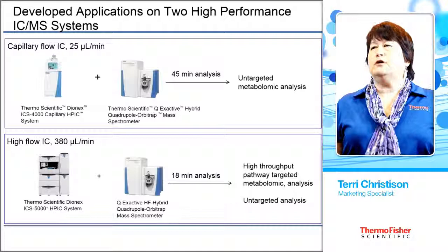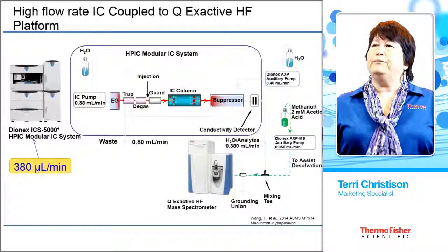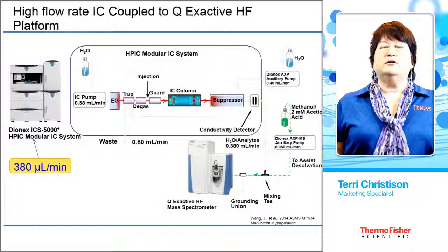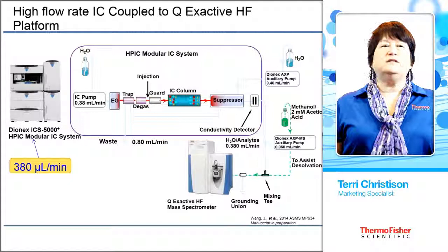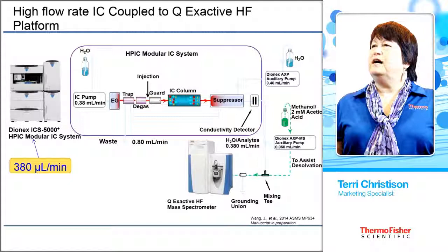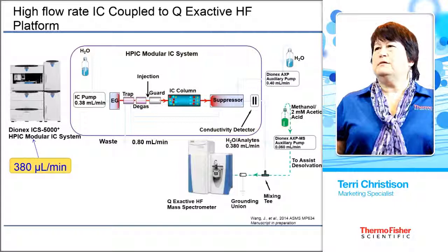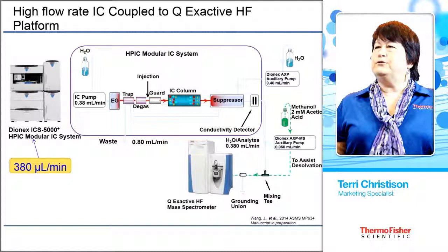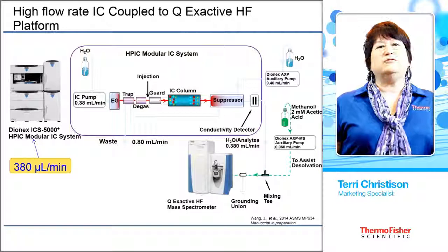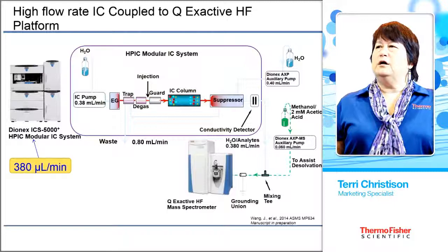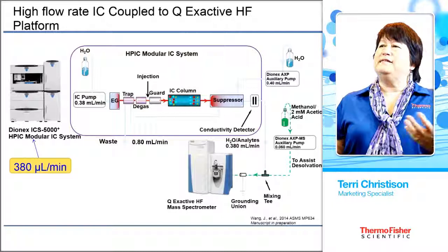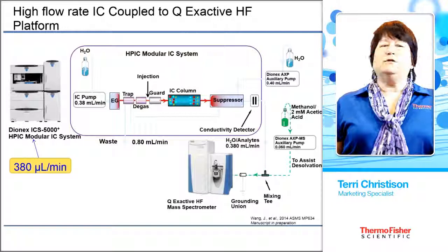Let's talk about the flow diagram. On the left is the ICS-5000 HPIC modular IC system. This system can be modified in many different ways for many different applications, and we selected it for its flexibility as well as its high-pressure capabilities. All of our reagent-free systems have the pump only seeing deionized water. Water flows through the pump, then goes to the EG where the mobile phase or eluent is made electrolytically. Then it goes through several traps and a degasser, where the sample is introduced between the guard and the degas module and separated by ion exchange. The sample comes in as a mixture and is separated at the end of the column. After the column is one of our most important devices — the desalting suppressor.